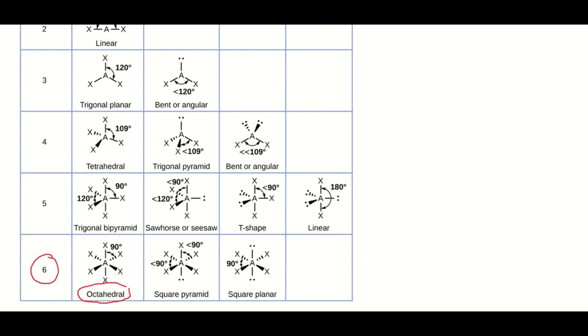In any case, that's not the molecular geometry because we have 2 lone pairs. Not all of those areas are bonded to other atoms. So when you have 2 lone pairs, the molecular geometry, that's what we care about, is square planar.